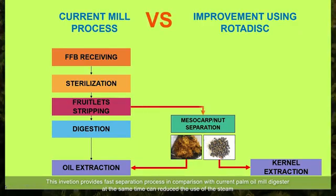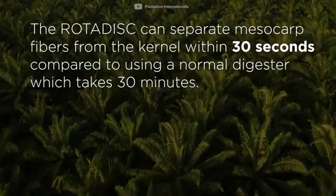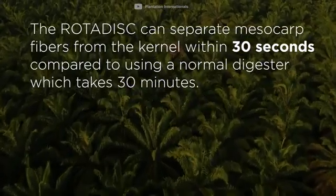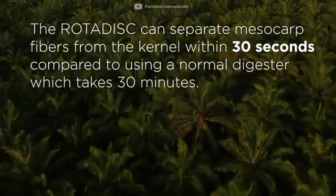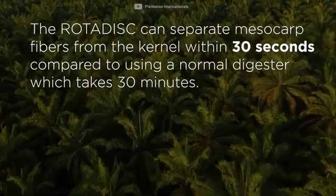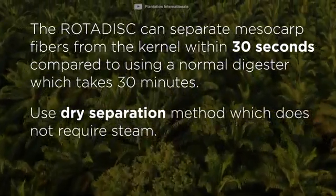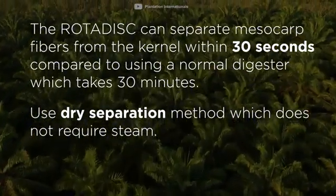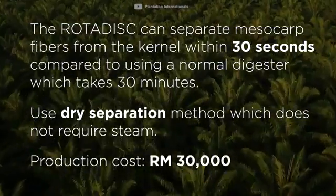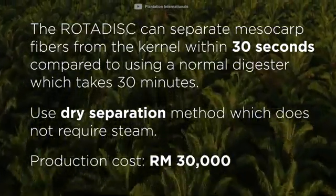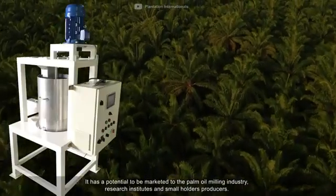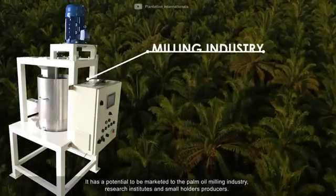This invention provides a fast separation process in comparison with the current palm oil mill digester, while also reducing the use of steam. The rotodisc can separate mesocarp fibers from the kernel within 30 seconds, compared to a normal digester which takes 30 minutes. It also uses a dry separation method that does not require steam. This technology was developed in collaboration with Sime Darby Plantation, with an estimated cost of 30,000 ringgit per machine.